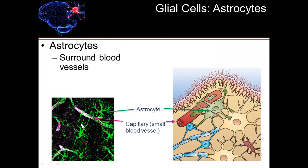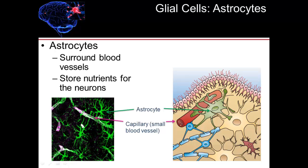Astrocytes surround our blood vessels in the brain. This makes it difficult for viruses and bacteria to get into the brain tissue, as they would have to travel all the way through those astrocytes to reach brain tissue. Astrocytes also store nutrients for neurons — they can store ions, potassium, neurotransmitters, as well as other nutrients for neurons to function.